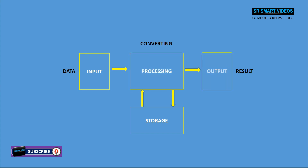Output is another basic function of a computer. This is the process of producing results into meaningful information. The fourth function of the computer system is storage. In this process, the computer is used to store data and instructions.